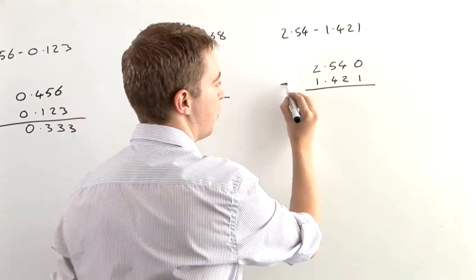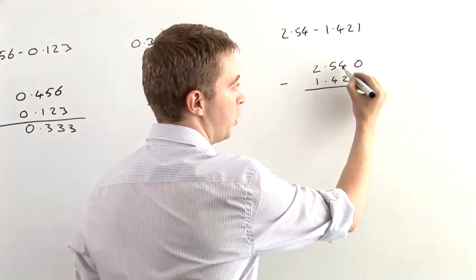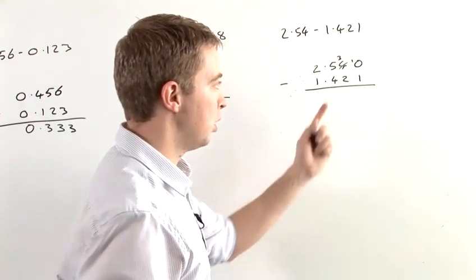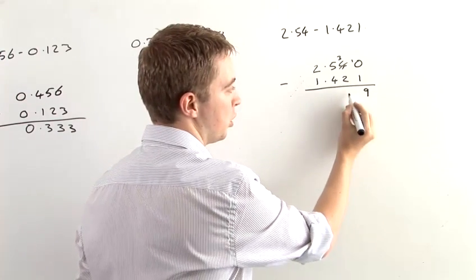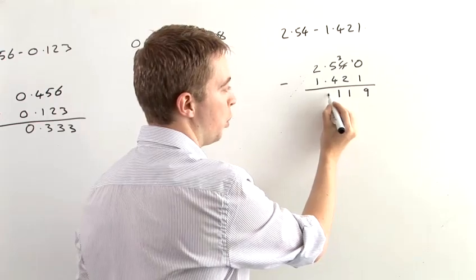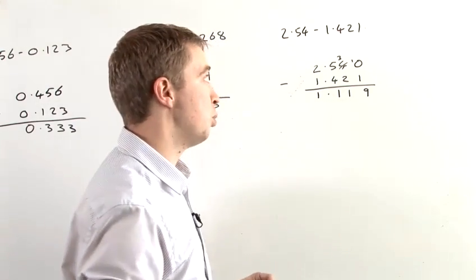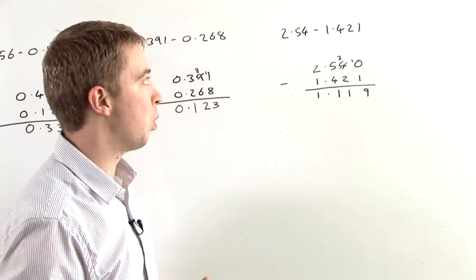So we're going to take those away from each other. Similarly to what we did in the second example, we're going to cross out the 4 and make that a 3, and make that 10. So we can have 10 minus 1 gives us 9. 3 minus 2 gives us 1. 5 minus 4 gives us 1. We put the point in, and then 2 minus 1 gives us 1. So 2.54 minus 1.421 leaves us with 1.119.